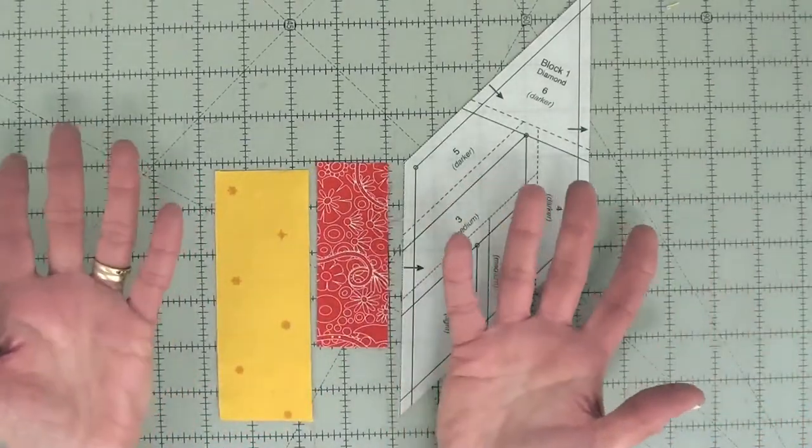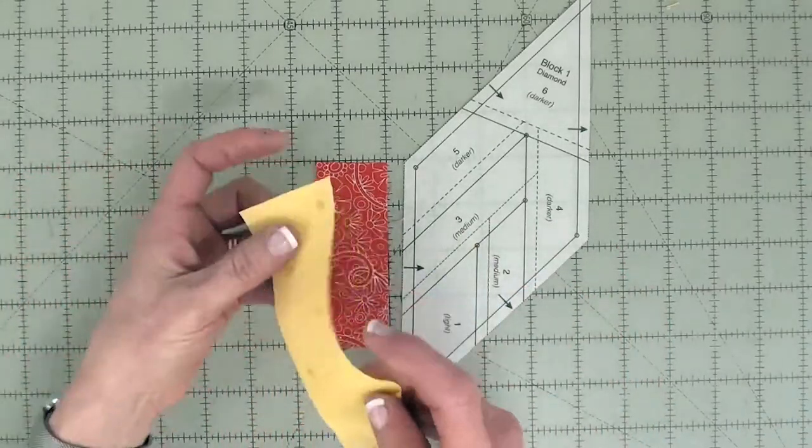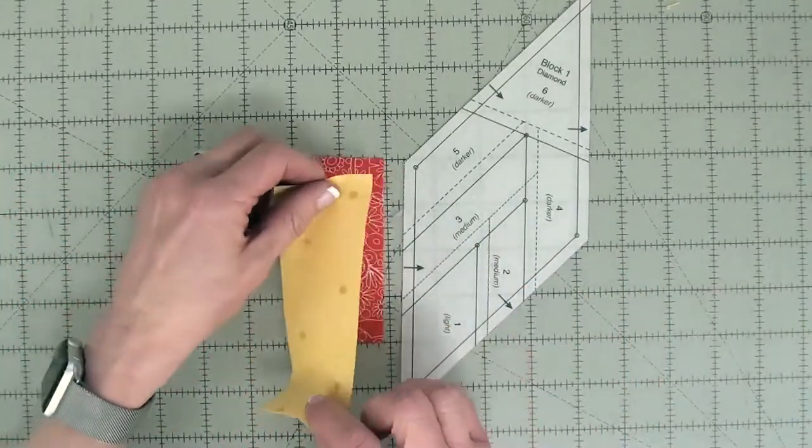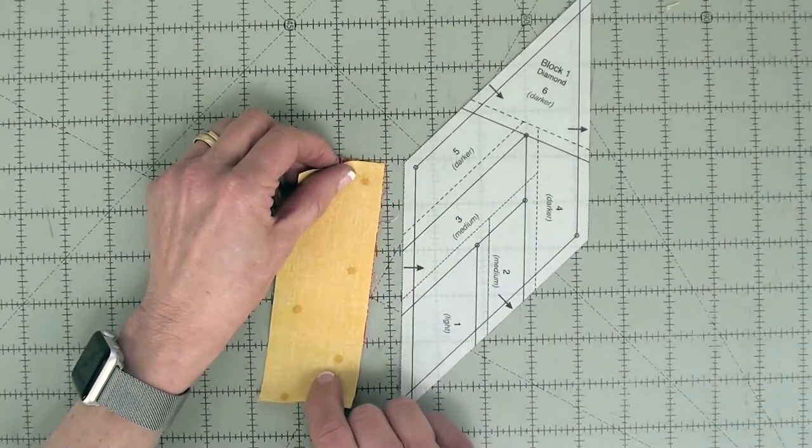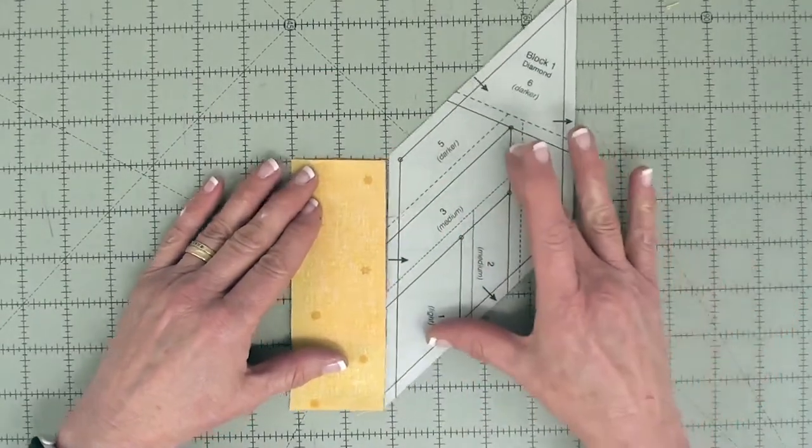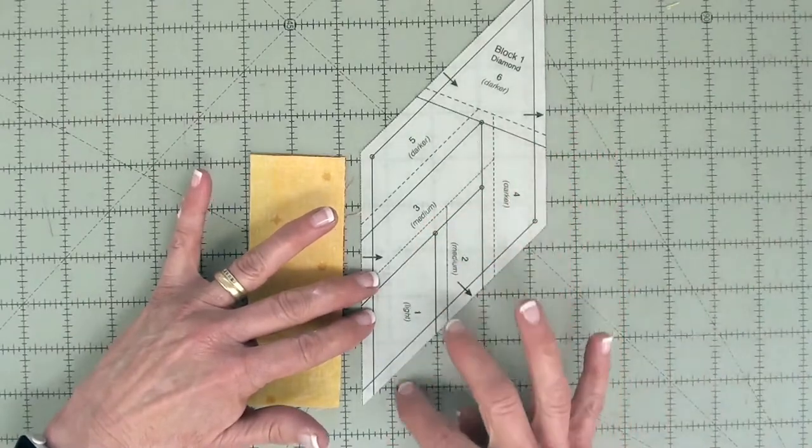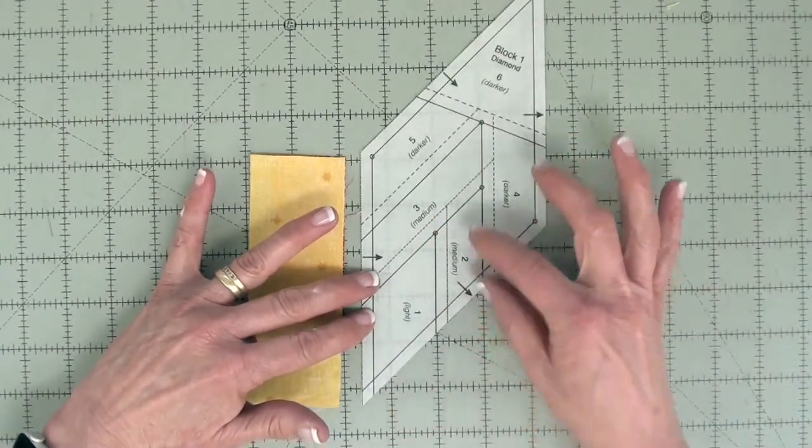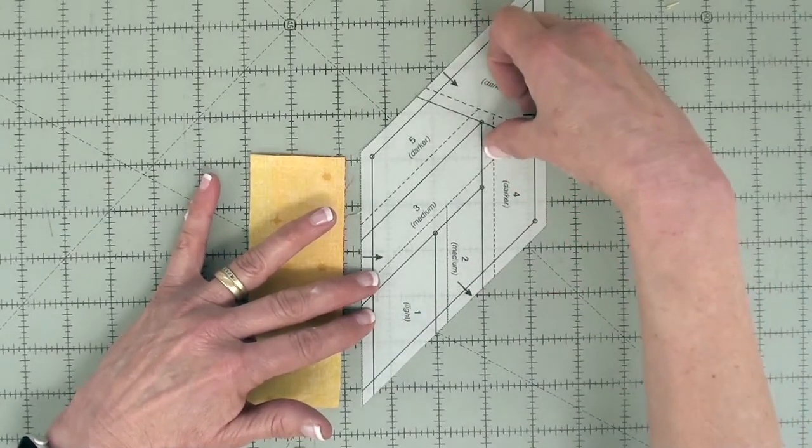When you sew, you always sew with your fabrics right side together. So I'm going to turn this over. Now the reason I'm setting the fabrics together this way, with the orange shoved in that direction, is because if you look at the paper, you'll notice that one is down here and two is way up there and the pointy seam allowance for two is way up there.